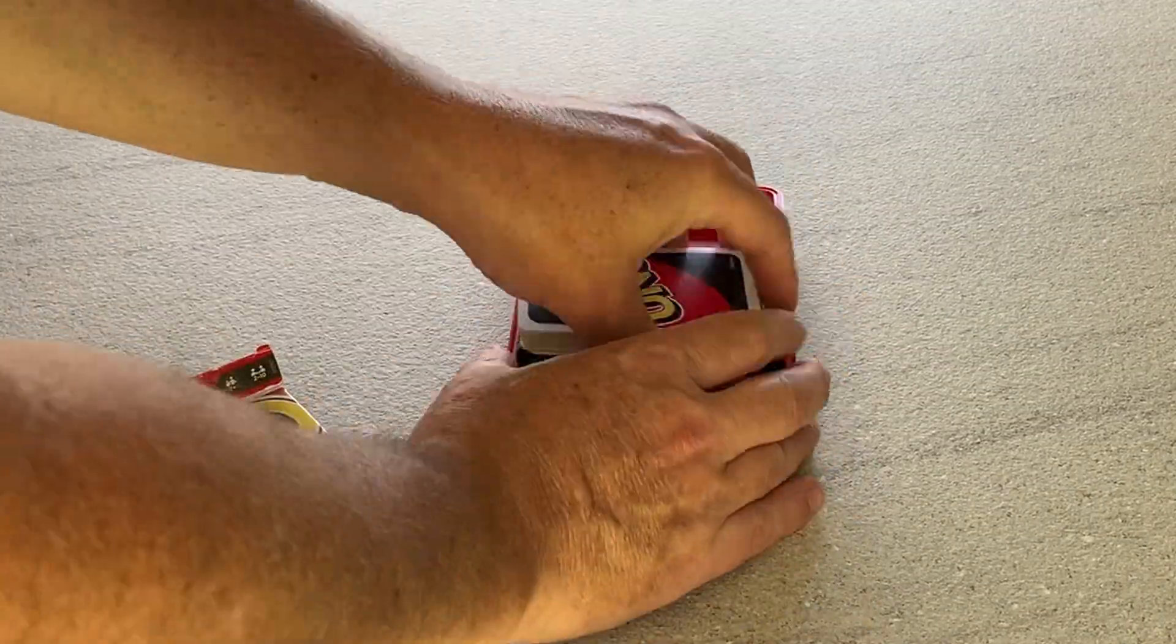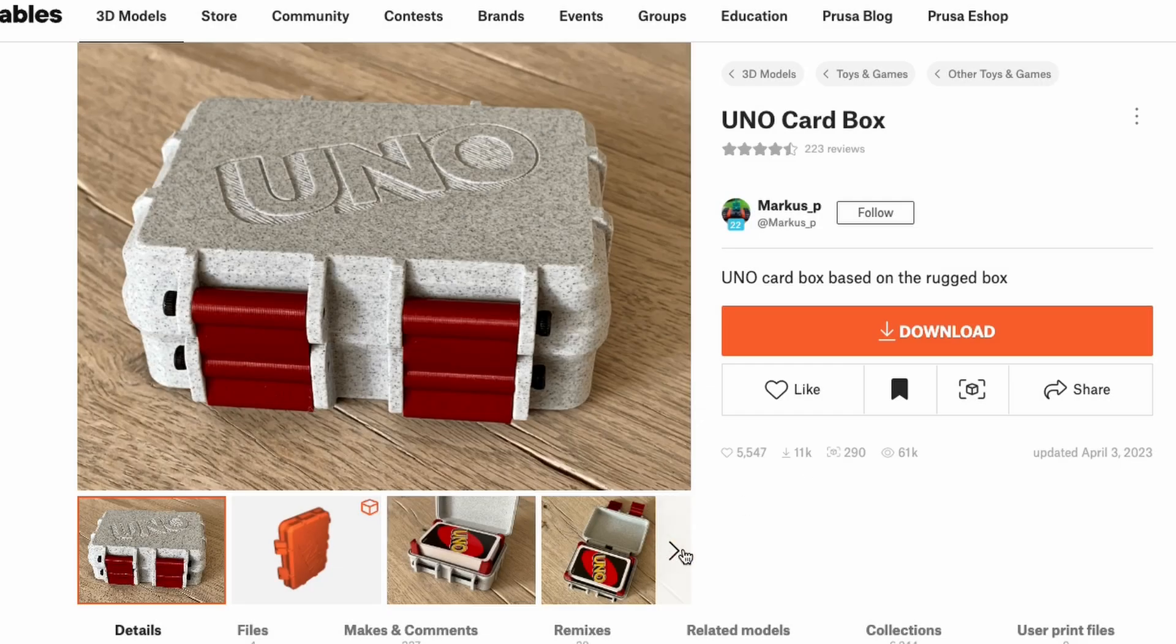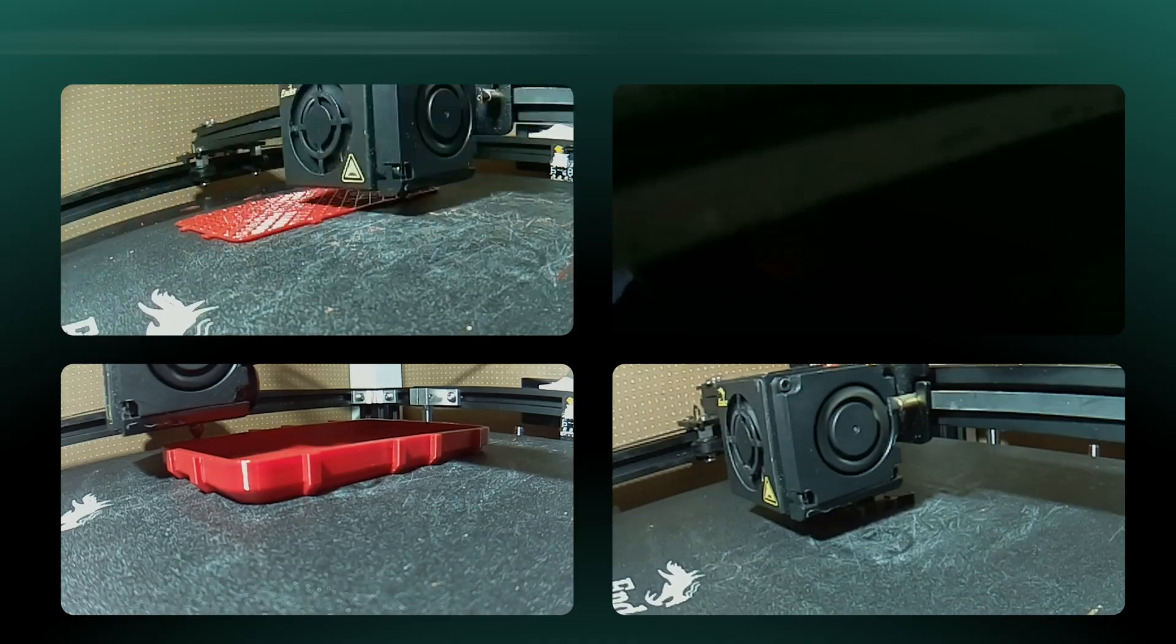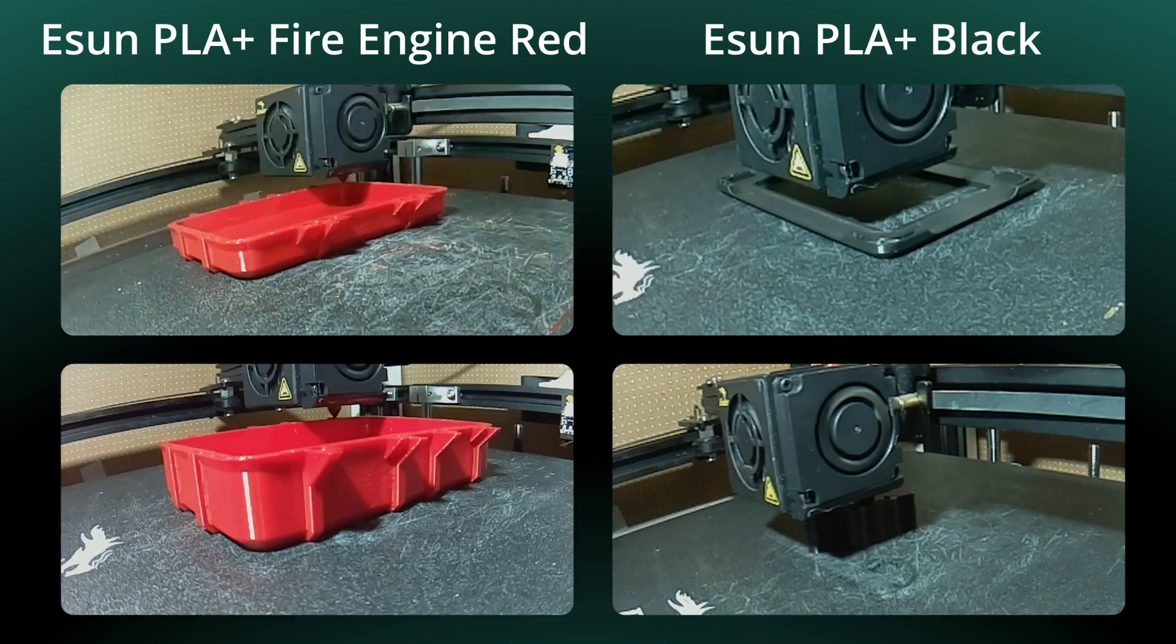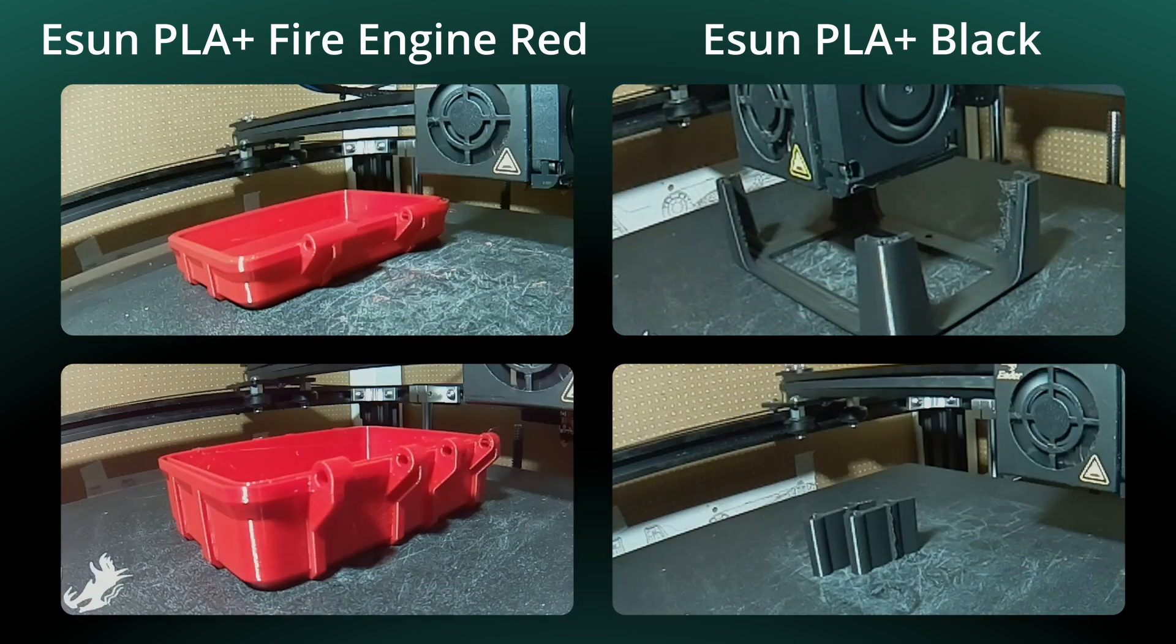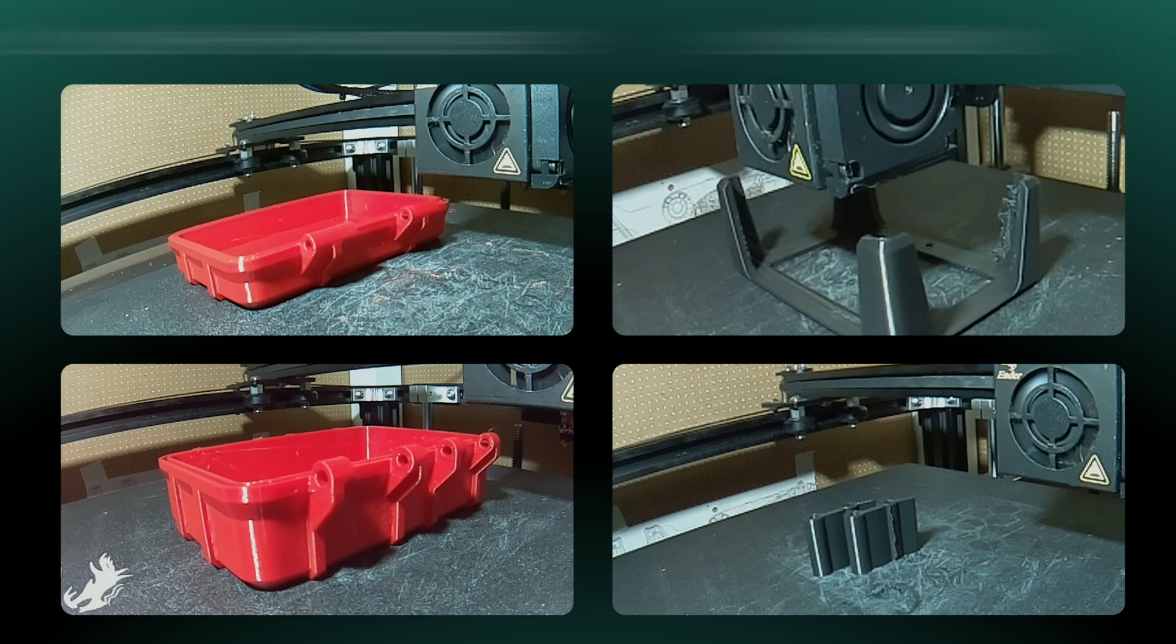If there was only a solution for that. I unearthed this version of the rugged storage box by Marcus P on Printables and set to work printing. I tested something else for the latches, but I'll go into that later. The first iteration I used PLA Plus from eSun.